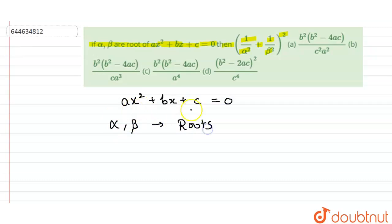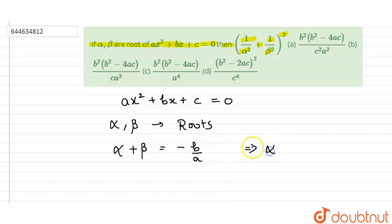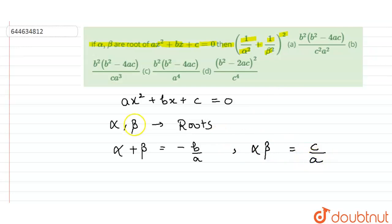If alpha and beta are roots of this equation, we can say the sum of the roots equals minus b upon a, where b is the coefficient of x and a is the coefficient of x². The product of the two roots equals the constant upon the coefficient of x², that is c upon a.